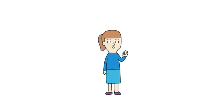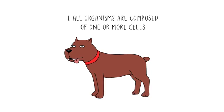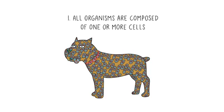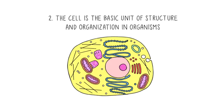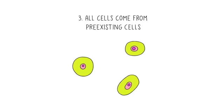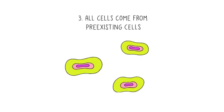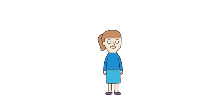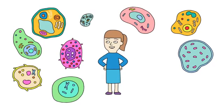There are three parts to the cell theory. One, all organisms are composed of one or more cells. Two, the cell is the basic unit of structure and organization in organisms. And three, all cells come from pre-existing cells. To be honest, this all sounds incredibly boring until you dig a little deeper into how the world of microscopic organisms and this theory came to be.